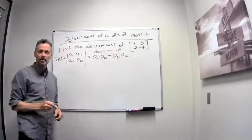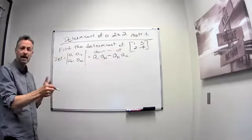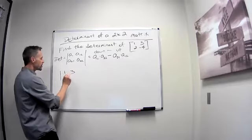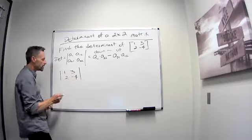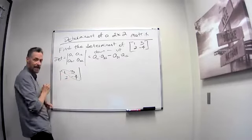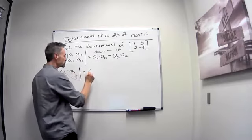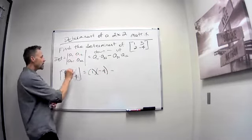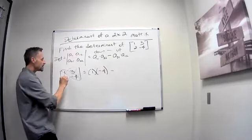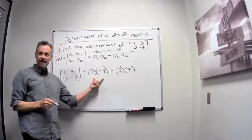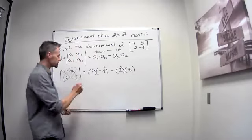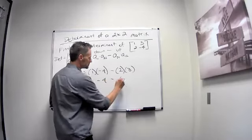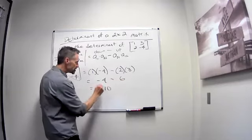So that's all you have to remember: multiply down, minus, multiply up. In this one, with the matrix 1, 3, 2, negative 4 — when I multiply down the diagonal, it's 1 times negative 4, minus, and when I multiply up, 2 times 3. So I get negative 4 minus 6, and this determinant is just negative 10.